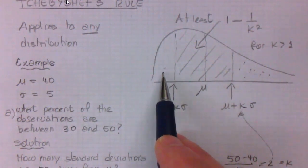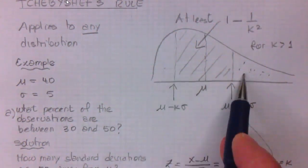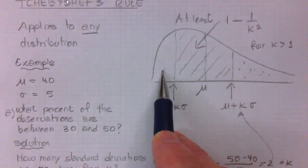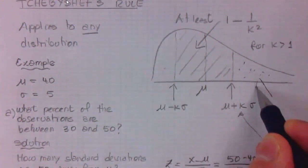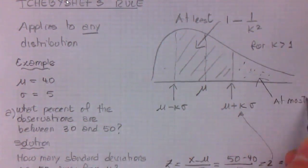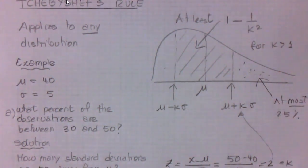It could be that the whole 25% is in one tail, making the other 0, or vice versa. So the only thing we can say is that we can have at most, not at least, at most 25%.